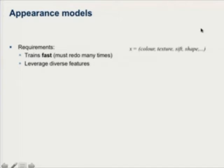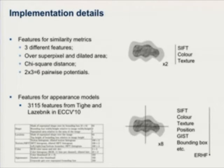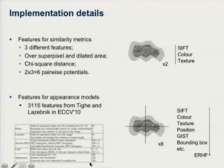For the unary potentials we also need multiple features, handled via extremely randomized forests. We use a large feature set including features inside superpixels as well as features computed by dilating the superpixel boundary, which helps capture boundary information. As Tighe argues, using all these varied features makes a significant difference, and a key contribution here is that we can use them effectively in a weakly supervised setting.